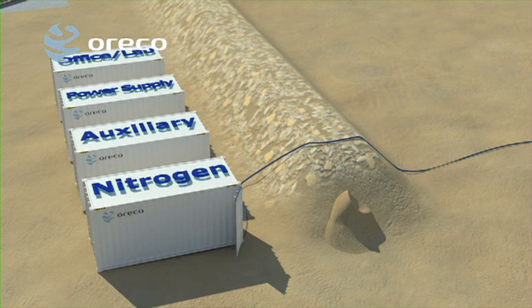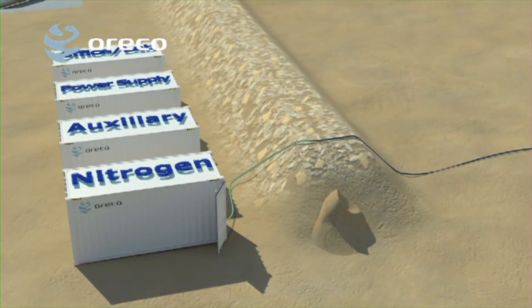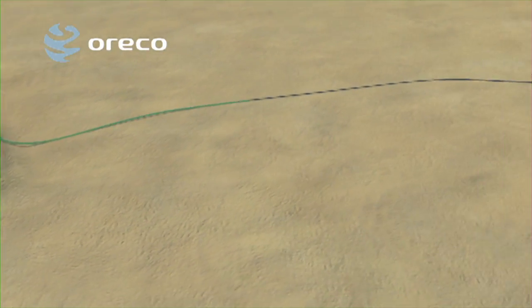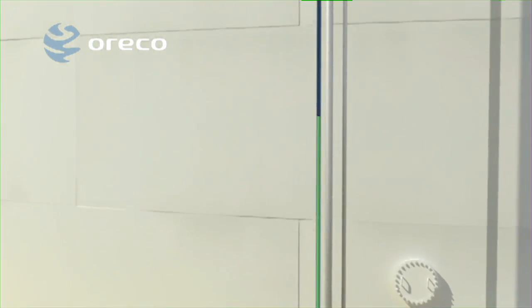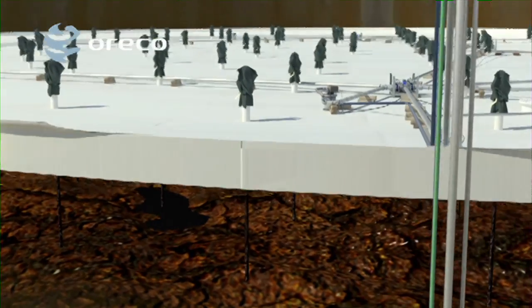To avoid risk of explosion, an inert gas, typically nitrogen, is injected into the tank to reduce the oxygen level to below 8%. This level is maintained throughout the entire tank cleaning process.